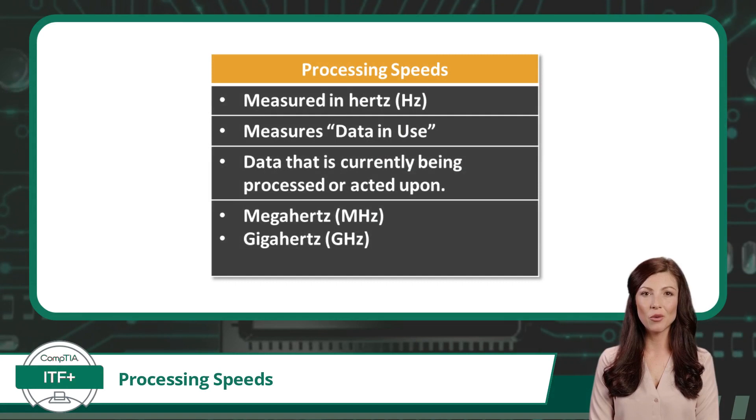Some relevant quantities you will most likely encounter for processing speeds are megahertz. Megahertz are quantities measured in millions of cycles per second. The clock rates for older computers and their processors worked at these processing speeds.